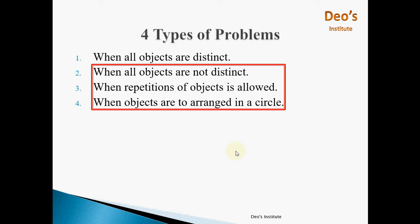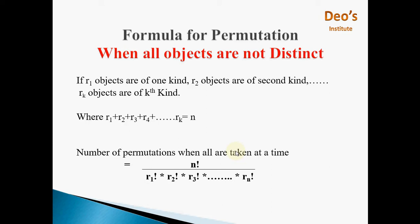The first type is when all objects are not distinct. The formula for permutation when all objects are not distinct: consider that r1 objects are of kind one, r2 objects are of second kind, and rk objects are of kth kind, where r1 + r2 + ... + rk = n. Then total number of permutations when all are taken at a time is n! divided by (r1! × r2! × r3! × ... × rk!), where each ri is the number of objects of that kind.